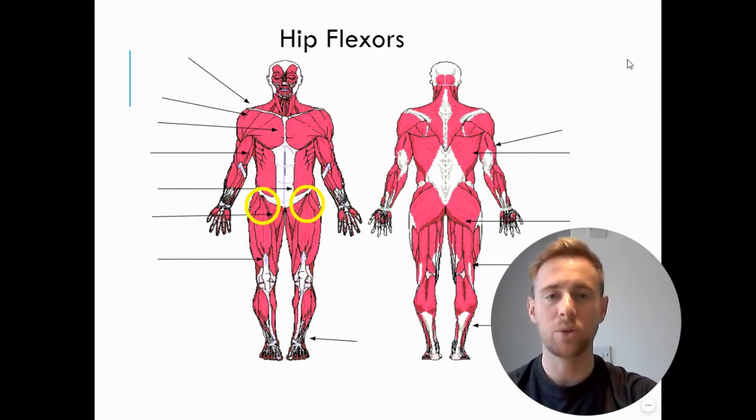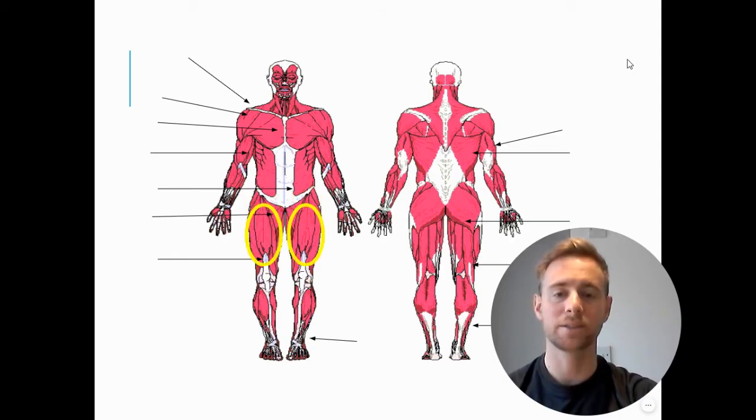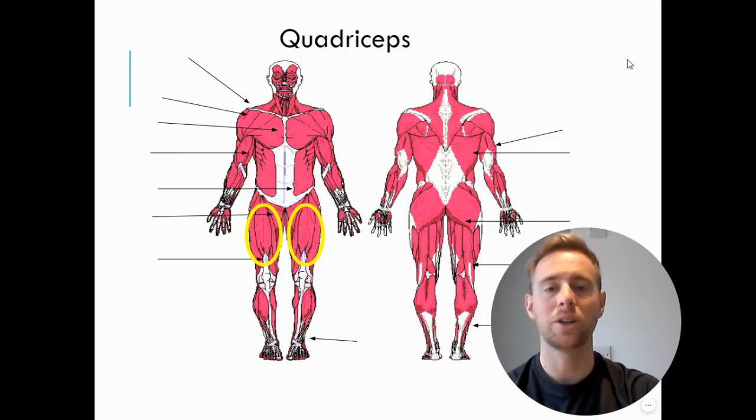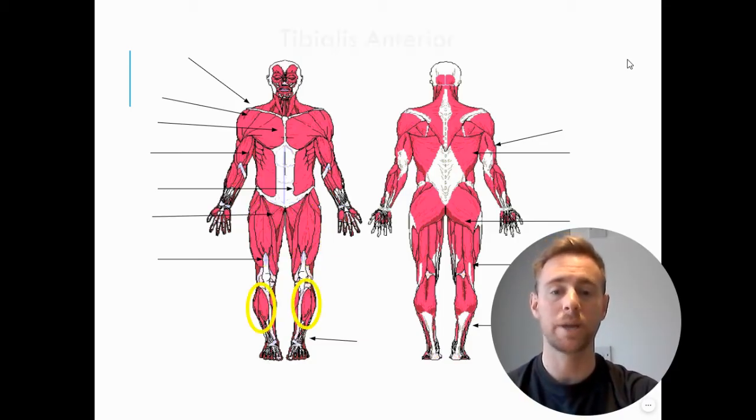Then just below them between our knee and our hip flexors we have our quadriceps. Then in the bottom of our leg between our knee and our ankle on the front attached to our tibia, we have our tibialis anterior muscles.